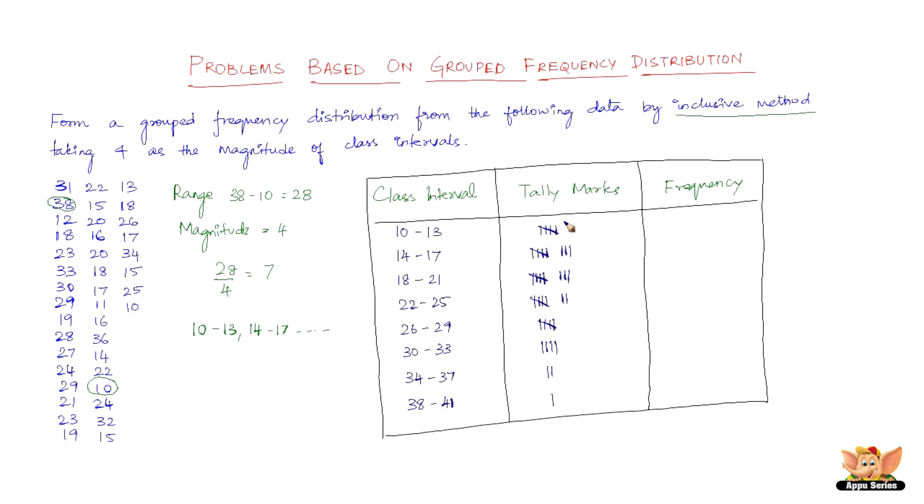The frequency is just converting the tally marks into numbers. So we've got 5, 8, 8, 7, 5, 4, 2, and 1. And you add these, we get 40. So 40 is the number of readings that we've got here. So this problem is constructing a grouped frequency distribution.